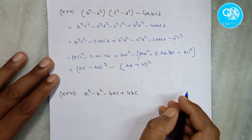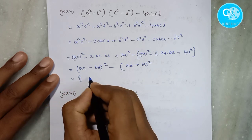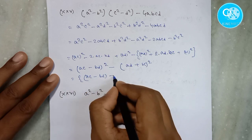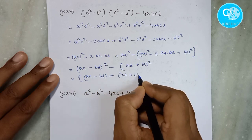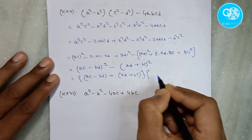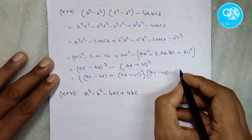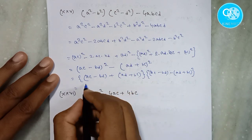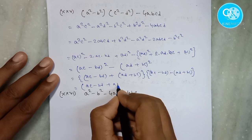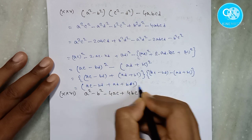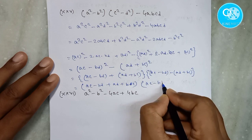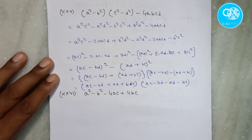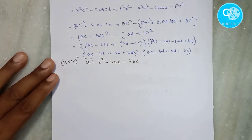2·ad·bc. We have to write abc·r whole square. So we have to write ac minus bd·r whole square. And we have to write ad plus bc·r whole square. Now we have to write the a square minus b square formula. So we have to write ac minus bd plus bc, and ac minus bd minus bd plus bc. So we have to write a square minus b square minus 4ac plus bc.